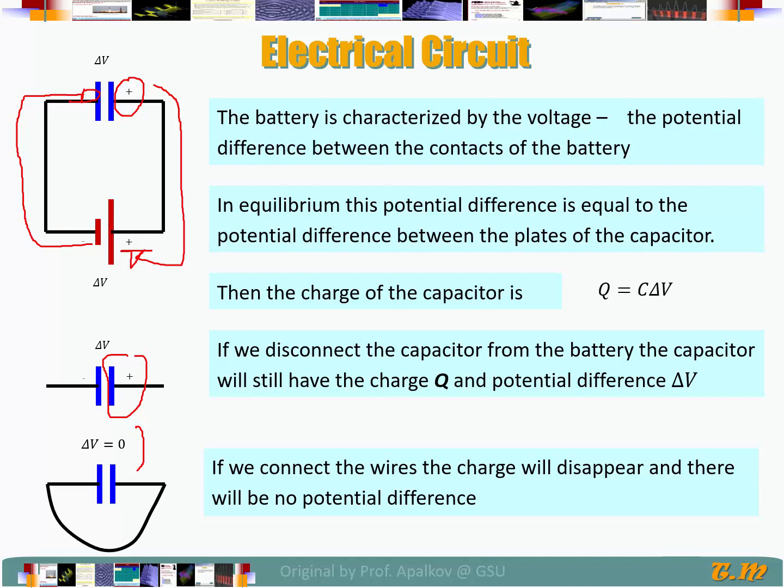One use of a capacitor is in flash photography. In flash photography, we need a huge amount of charges to move through the light bulb over a short amount of time. Batteries cannot provide that.